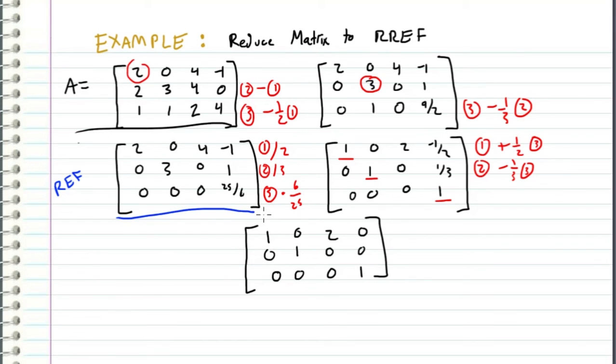So we have this matrix, which is the reduced row echelon form, and the problem is complete.